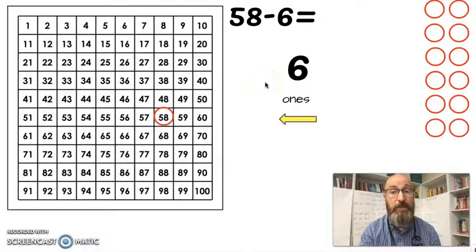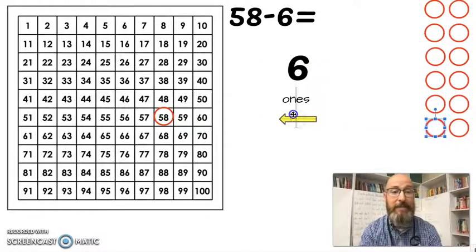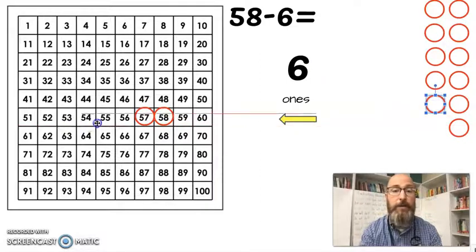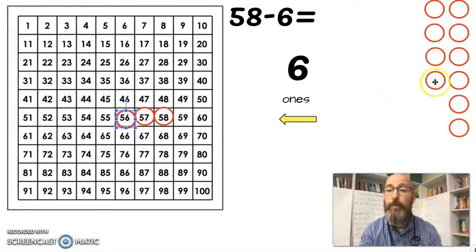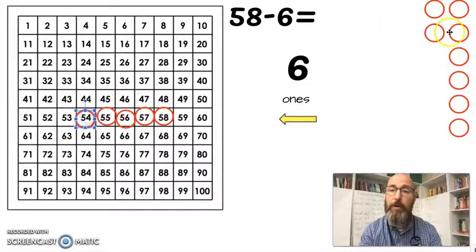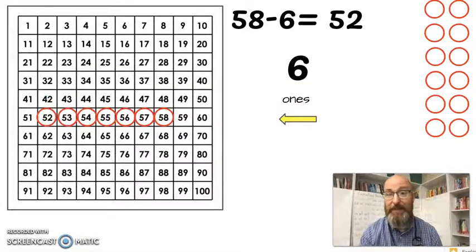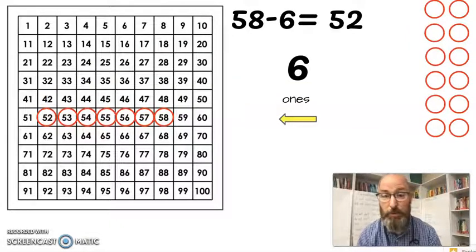Again no tens just ones. And we've already said that when we have ones we go to the left. How many times? 6. So let's move 6 times. Count with me. 1, 2, 3, 4, 5, and 6. So if I move that 6 times I see that 58 minus 6 equals 52.